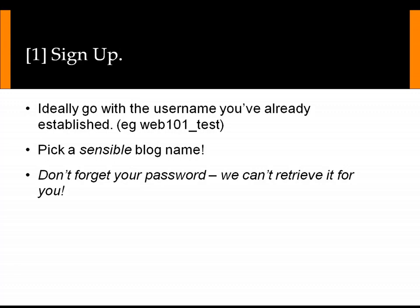So we're going to go through the sign-up process. Three things to keep in mind. Firstly, try and use a consistent name across all of your services — if you're doing Web 101 you probably will have chosen a username across all of the services you've signed up for, so try and stick with that. When you pick a name for your blog, please pick a sensible name if you're going to use something different from your username. And finally, this is an independent system so please don't forget your password, as I and the administrators at Curtin University cannot retrieve a lost WordPress.com password for you.